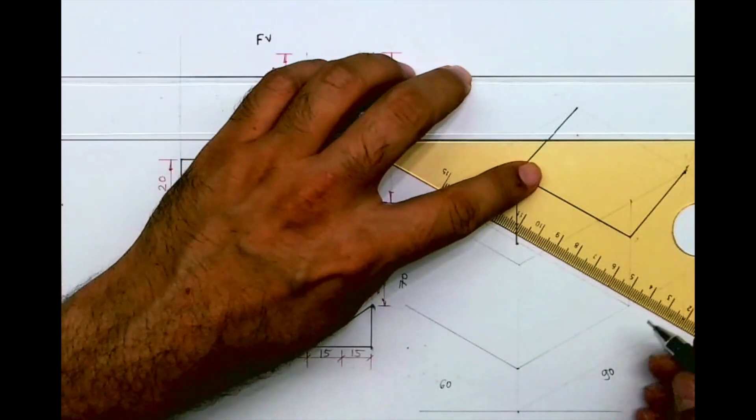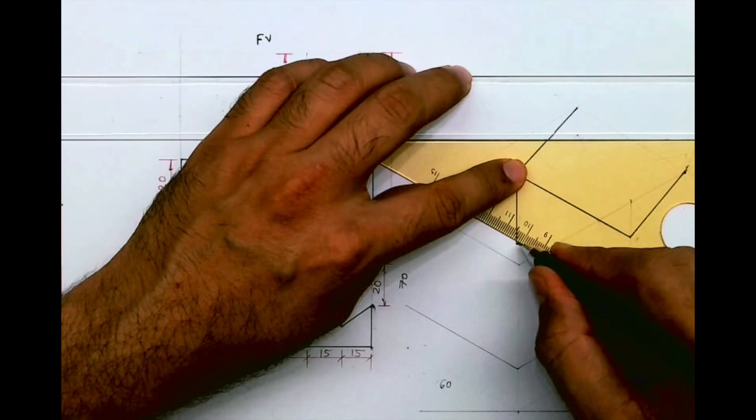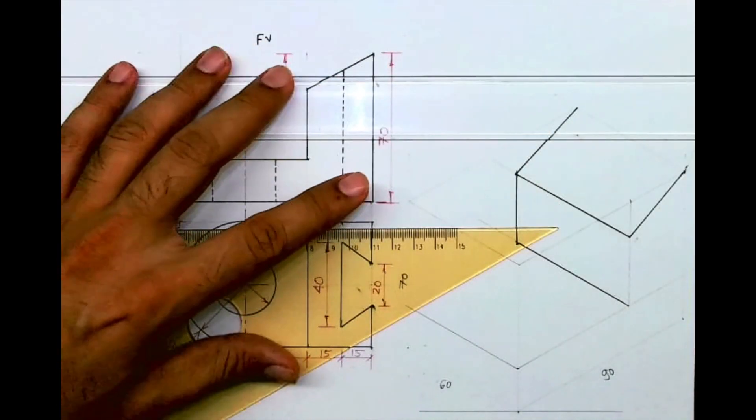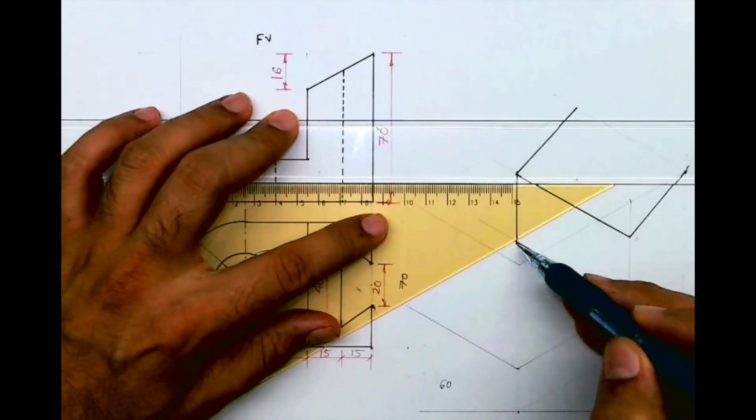So you can do anyway, either you go behind by 60 or you drop that line and wherever they intersect, that will be the point. Now here also I'll extend.